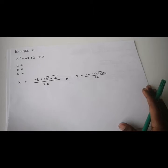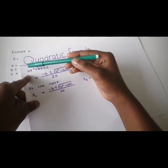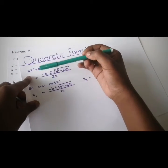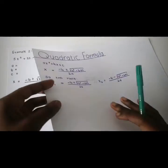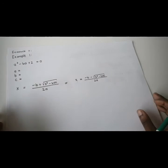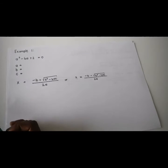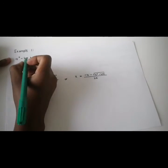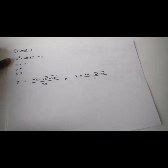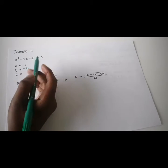Example 1. First we have to identify a, b, and c. We want our equation in the correct form. Over here we have a squared minus 6a plus 2 equals 0. The coefficient a is 1, coefficient b is negative 6, and coefficient c is 2.